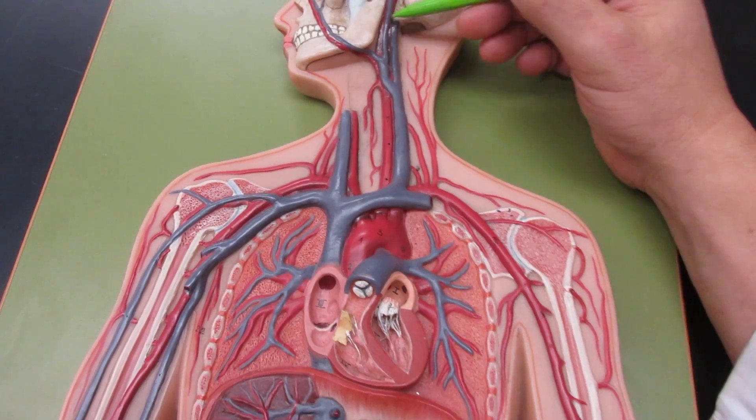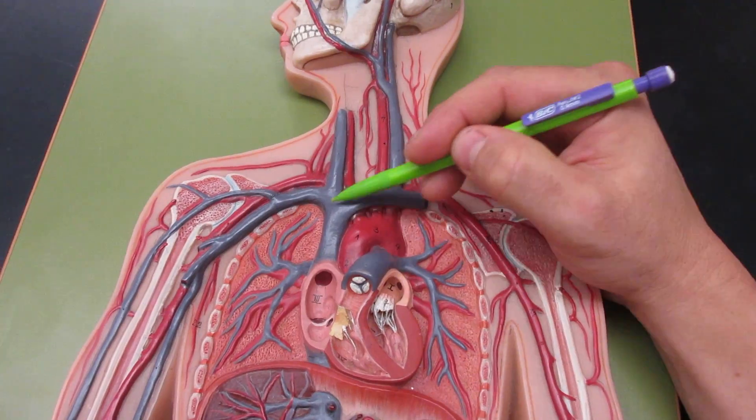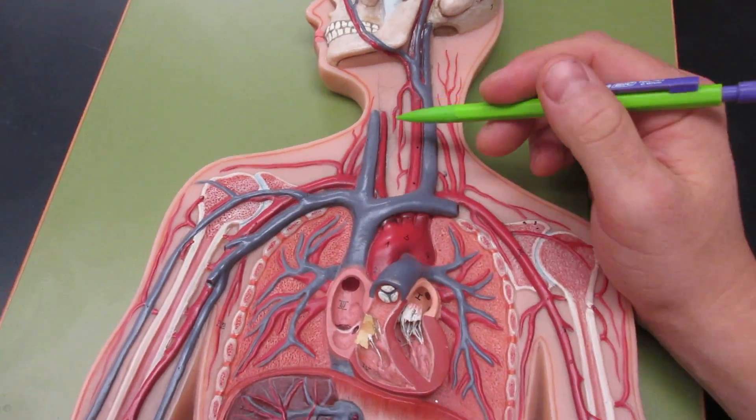But at least you can see where they're draining from. So then that blood will go into the brachiocephalic vein right here.